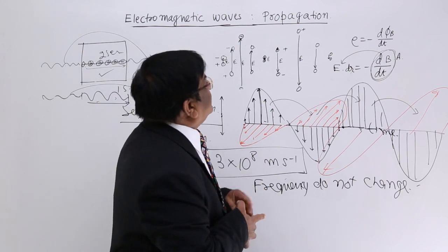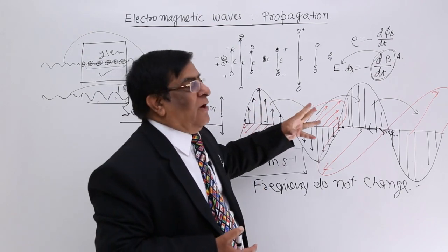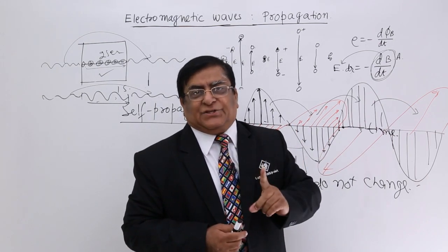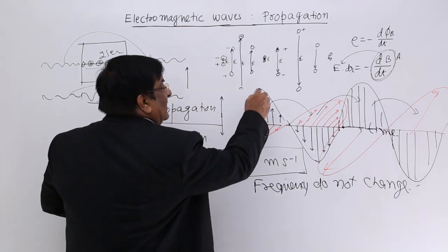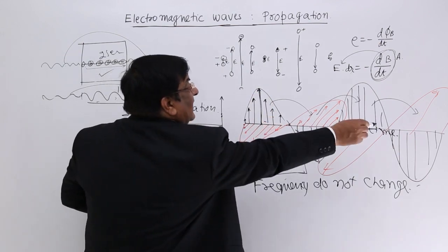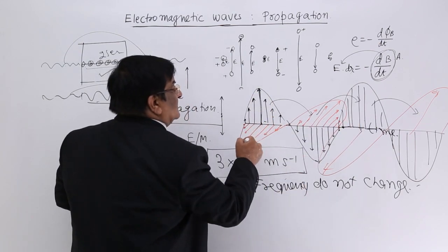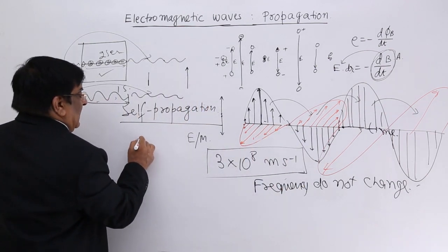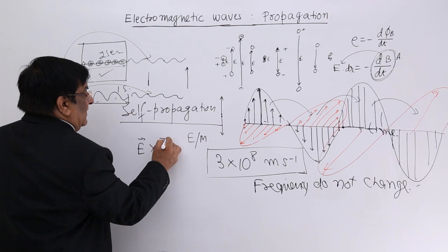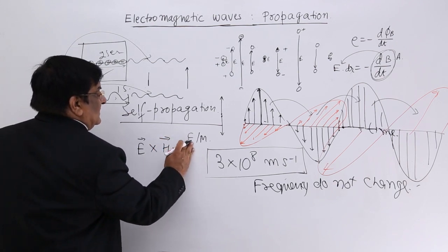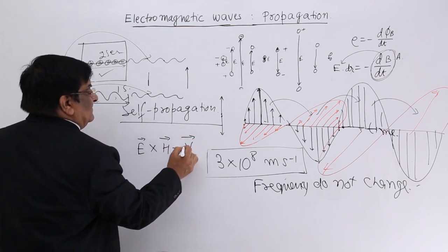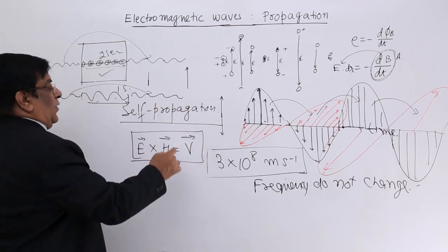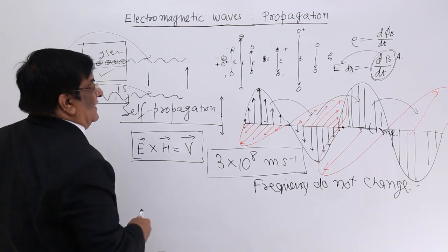Remember the direction relationships. If the electric field is along J and the magnetic field is along K, then the velocity of propagation is along I. So we have the electric field direction, the magnetic field direction, and the velocity of light — these are the vector relations between them.